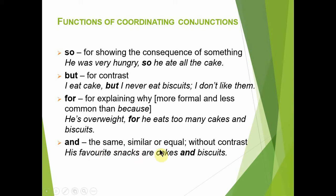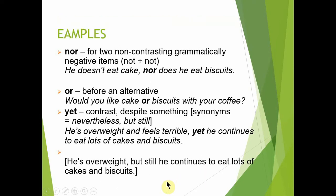'And' دو similar یا equal چیزوں کو بغیر contrast کے جوڑتا ہے — جیسے 'His favorite snacks are cakes and biscuits'۔ 'Nor' استعمال ہوتا ہے جب دونوں چیزوں کی نفی ہو — جیسے 'It doesn't eat cake nor does it eat biscuits'۔ 'Or' دو alternatives دینے کے لیے ہے — جیسے 'Would you like a cake or biscuits?'